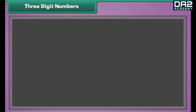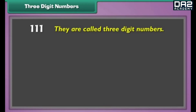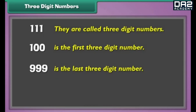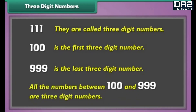Three-digit numbers. Numbers that have three digits in them are called three-digit numbers. Hundred is the first three-digit number — it is the smallest three-digit number. Nine-hundred and ninety-nine is the last three-digit number — therefore, it is the largest three-digit number. All the numbers between hundred and nine-hundred and ninety-nine are three-digit numbers.